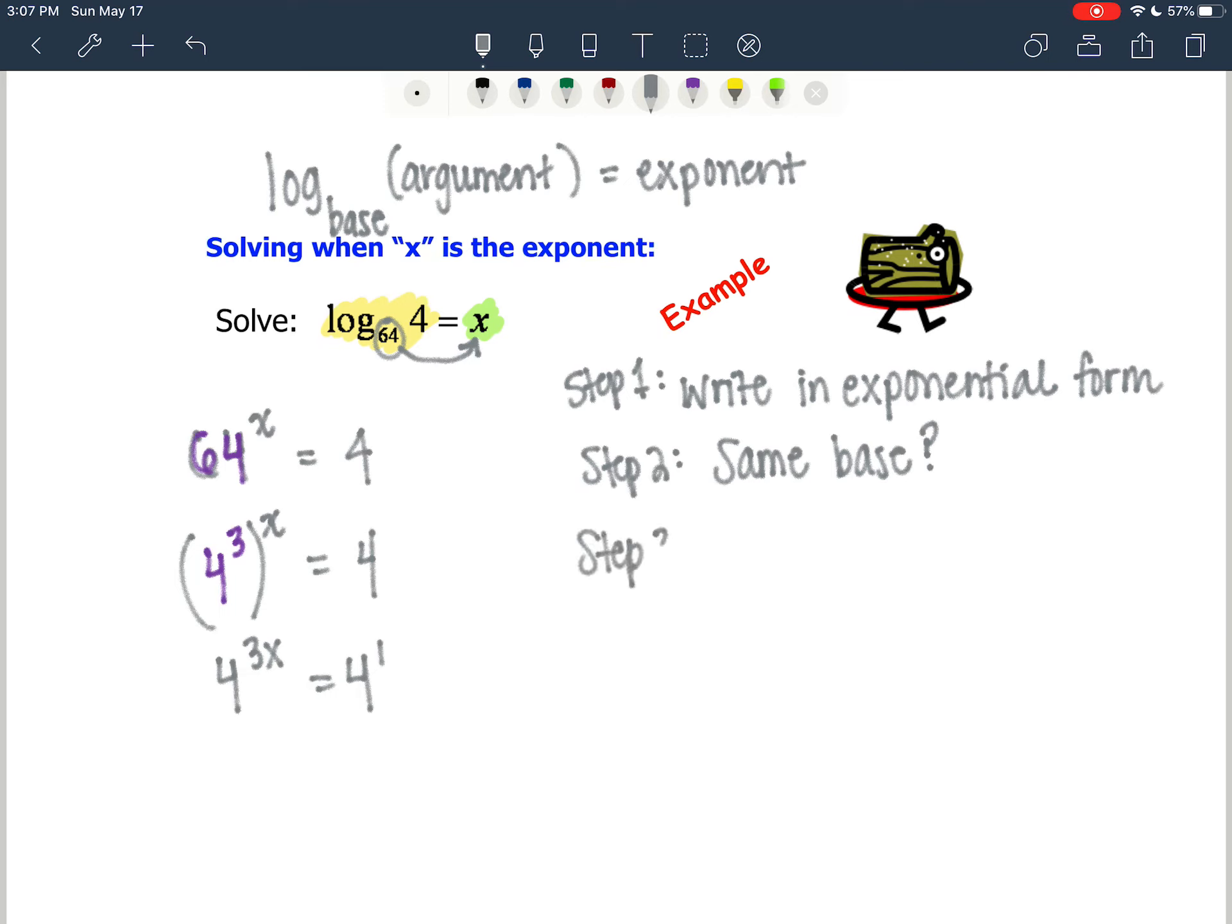Once you have the same base, you set the exponents equal to each other. Now that the exponents are equal to each other, 3x equals 1, we solve. 3x equals 1, therefore x equals 1/3.